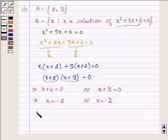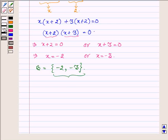So the set B contains the elements -2 and -3, which are the solutions of the equation x² + 5x + 6 = 0. Now observing the sets A and B, we find that they do not have the same elements, and thus we can say that A is not equal to B. The answer is no.